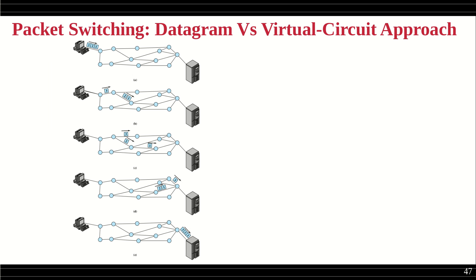Looking at the datagram approach with an example: this machine is trying to send information divided into three packets — packet one, two, and three. It sends them to a nearby switching node, which chooses a particular path. Packets one and two are transmitted over this path by this switch, but at the same time three is just arriving. The switch then determines a different route for packet three, so one, two, and three get split — one and two take one path, three takes another path.